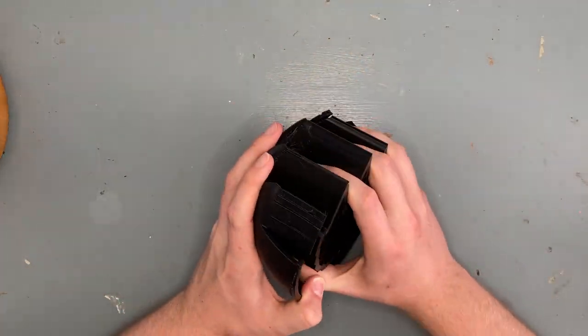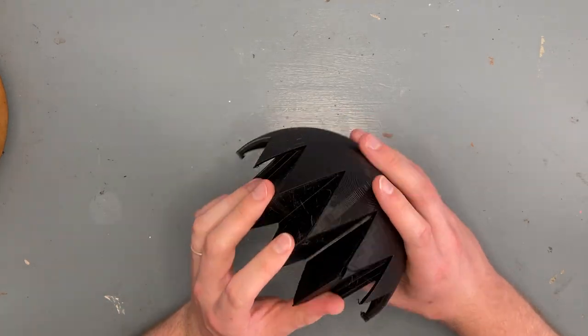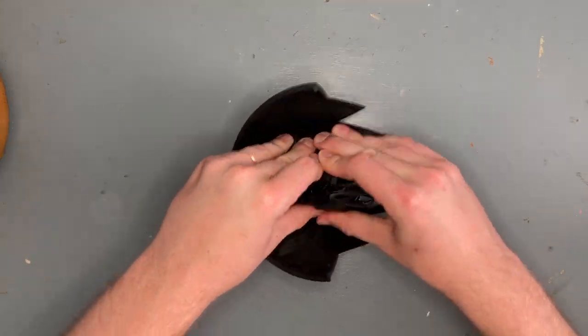I'm going to start with the head of the Chain Chomp. For this I used standard supports. They came off fairly easily and left a really good surface finish on the inside of the part. The geometry of the supports was also pretty cool.